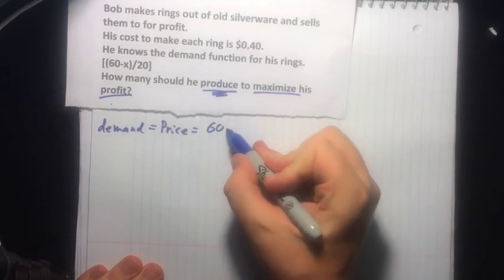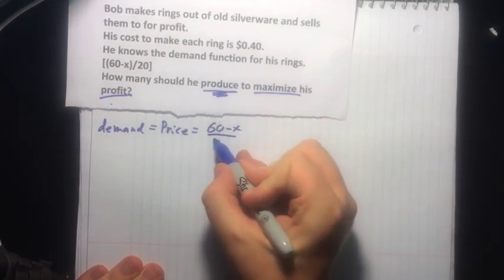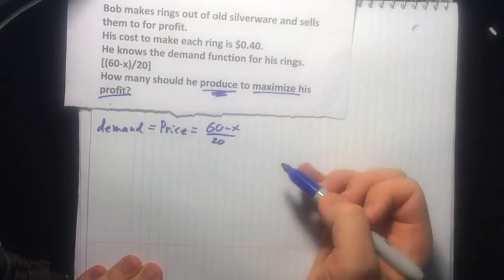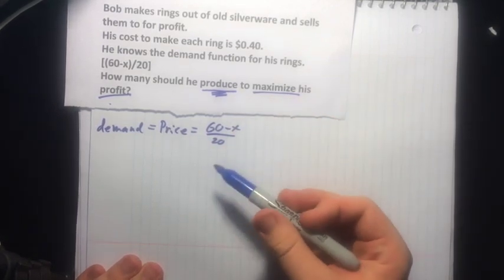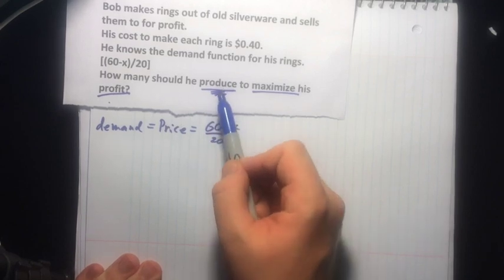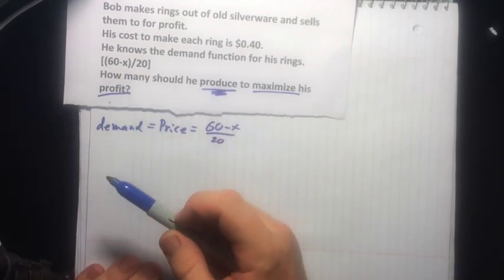So I'll just write it down: 60 minus x divided by 20. So that's our price here. And it's controlled by how many he produces. So that's why it matters how many Bob produces, and that's what will maximize his profit.